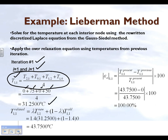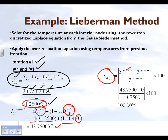In iteration one for node (1,1), we write the Gauss-Seidel equation. The initial assumed temperatures at internal nodes are zero, and the boundary node temperatures are known. This gives us 31.25°C — the same as the Gauss-Seidel result. In the Lieberman method, we then apply a weightage: lambda of 1.4 to the new temperature and (1 − 1.4) = −0.4 to the old temperature (which was zero), giving us 43.75°C. The absolute relative approximate error is 100% since the initial guess was zero.